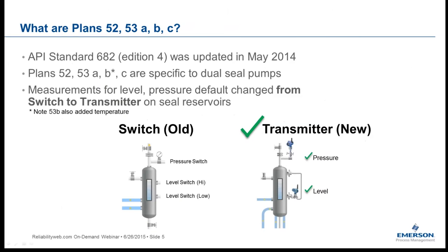The plans we're focusing on here are Plan 52 and Plans 53A, B, and C — all specific to dual seal pumps. The main difference between 52 and 53 is that Plan 52 is an unpressurized system and Plan 53 is pressurized. Looking at the artist renditions on the slide, Plans 52 and 53A look very similar at first glance but differ in the pressure at which they operate.